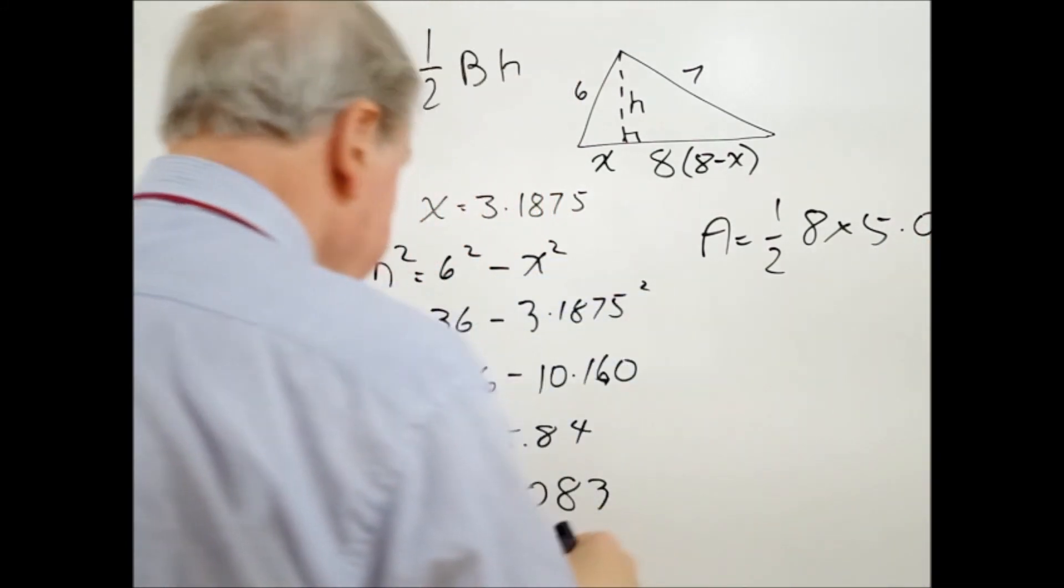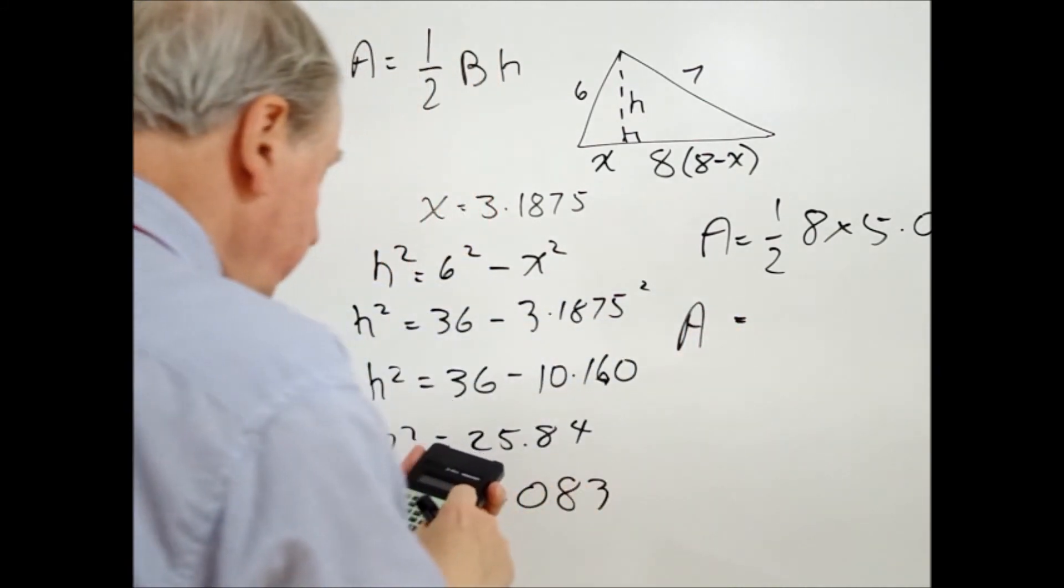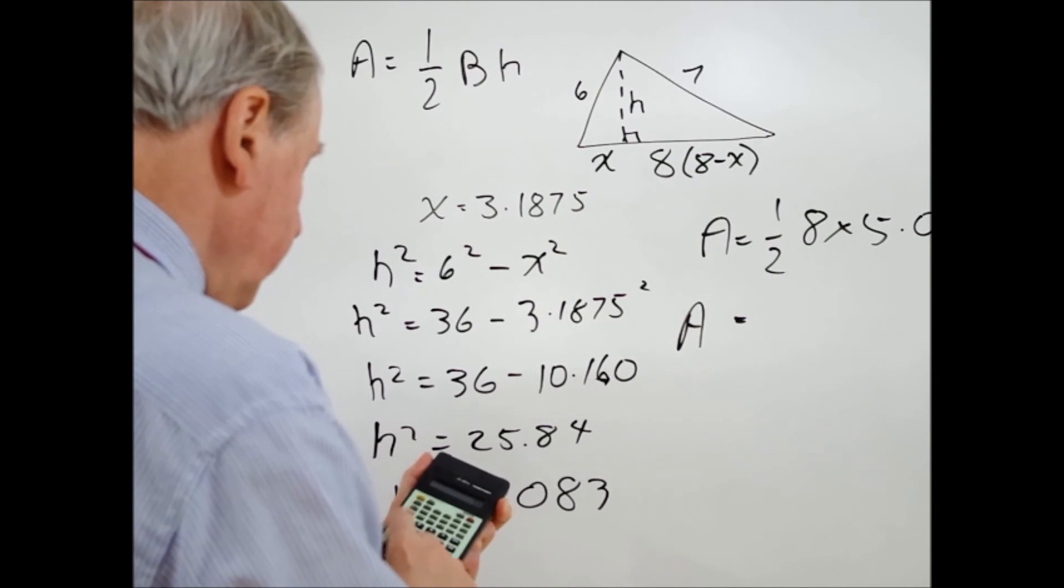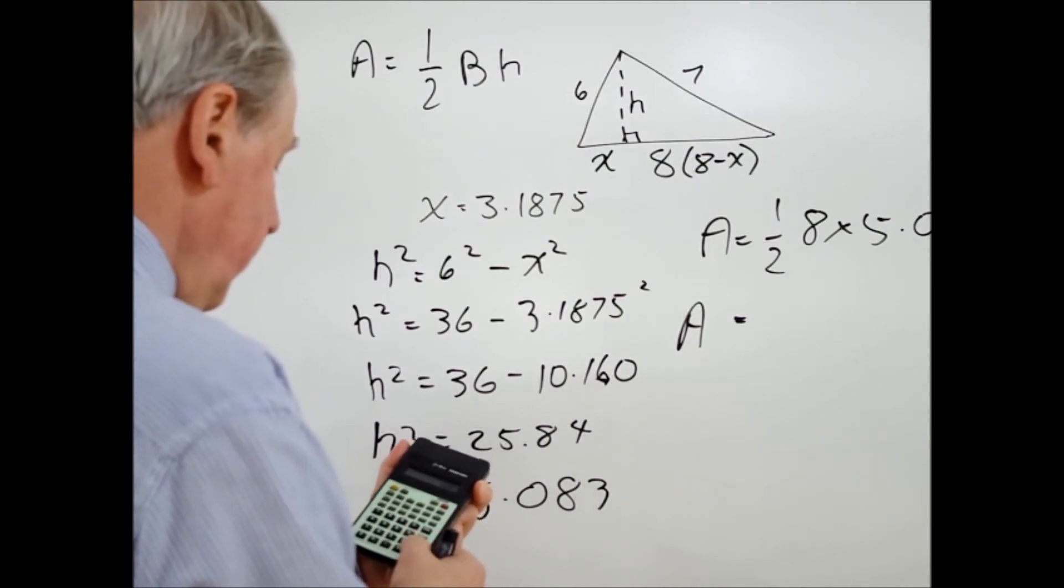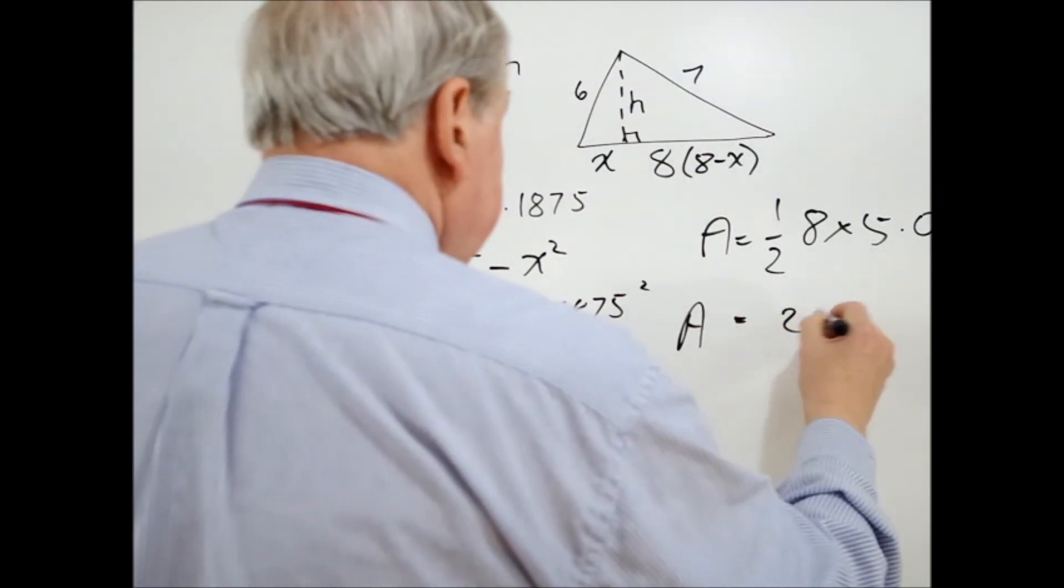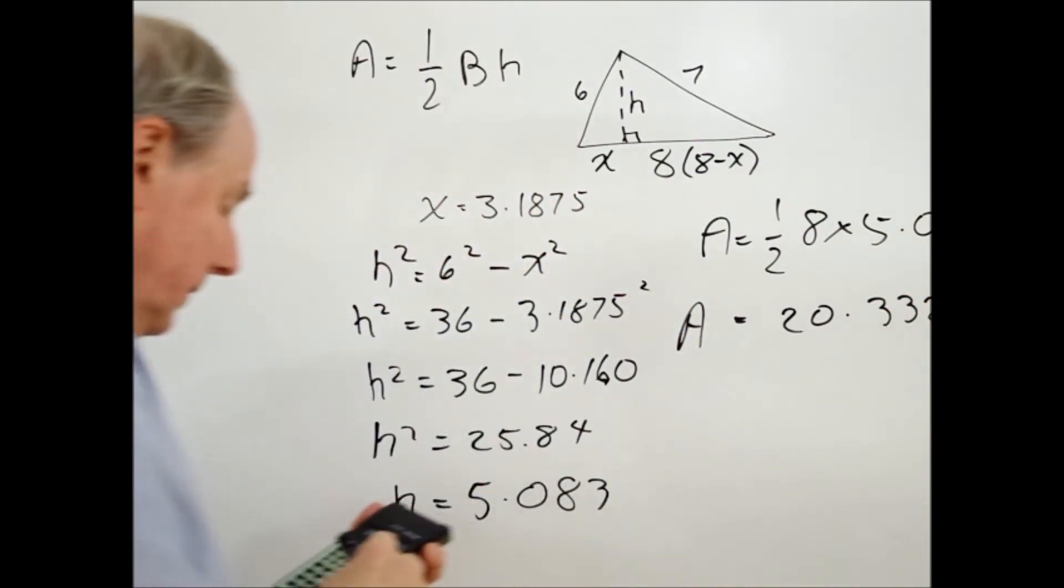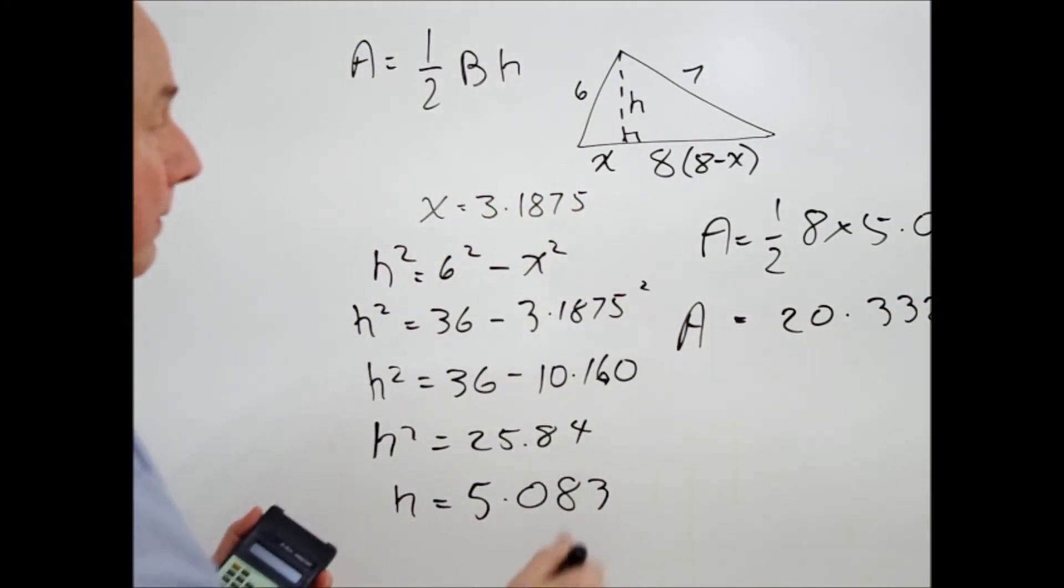And I'll work that out, that is equal to, area is equal to 4 times 5.083, which equals 20.332. And that's the final answer.